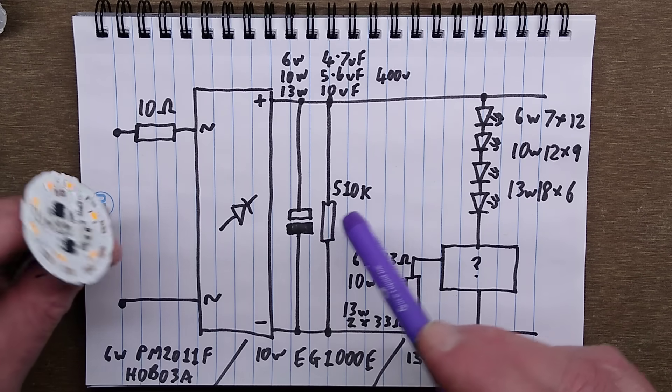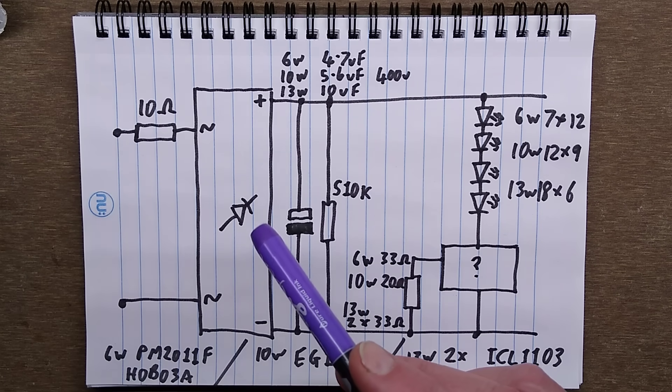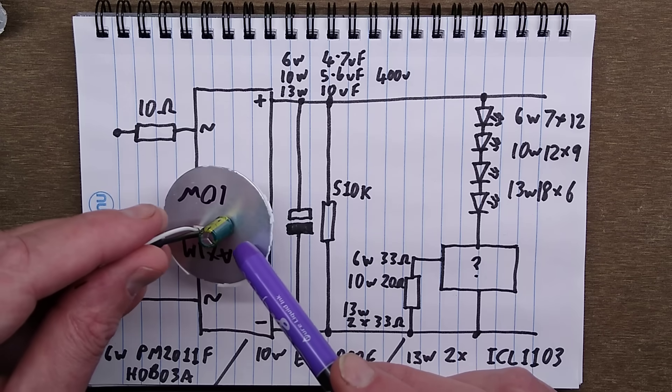The capacitor varied between the lights. The 6 watt one had a 4.7 microfarad capacitor, the 10 watt one had a 5.6 microfarad capacitor, and the 13 watt one had a 10 microfarad capacitor.